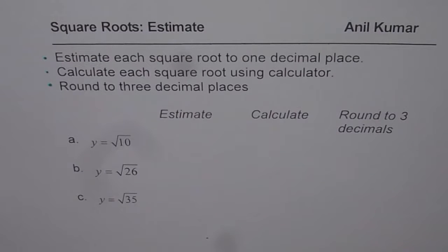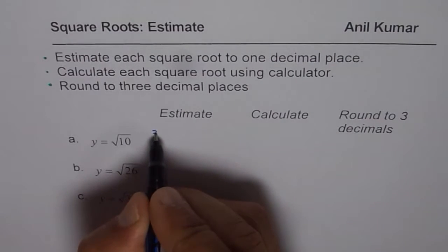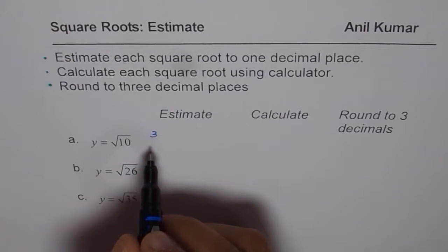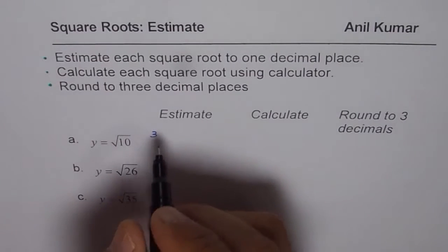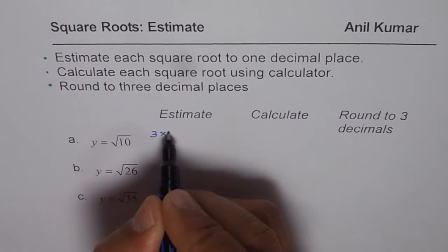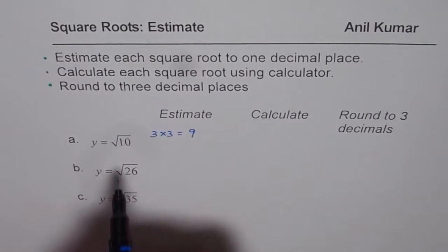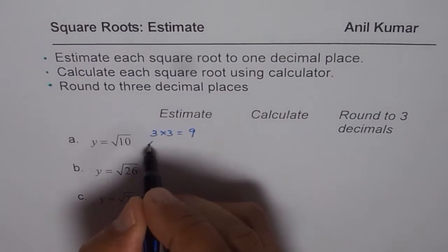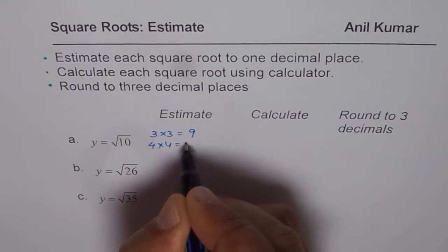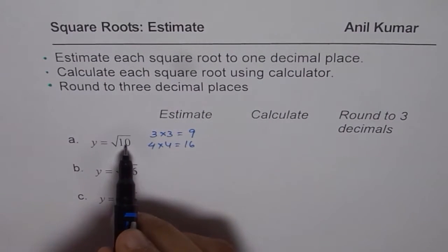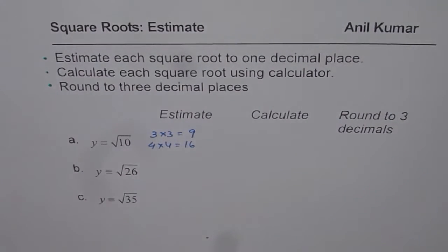To estimate, we can try multiplying two numbers which are exactly the same. 3 times 3 is 9. Similarly, 4 times 4 is 16. Now 10 is a number between 9 and 16, which is why we selected 3 and 4. We know 3 squared is 9, and 4 squared is 16.